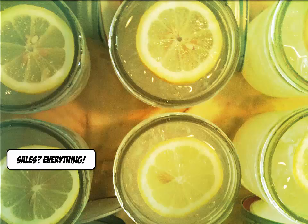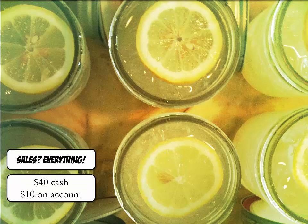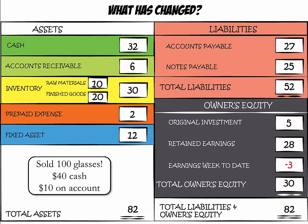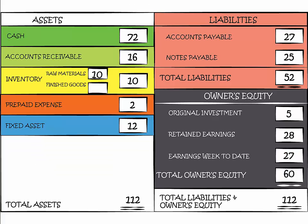Your business did great — you sold everything: 100 glasses at 50 cents per glass. You received $40 in cash and $10 was purchased on account. We add $40 to cash and $10 to accounts receivable, and bring finished goods down to zero. Since you sold lemonade for $50 but the cost of goods sold was only $20, we add $30 to earnings week to date, bringing it from negative $3 to $27.